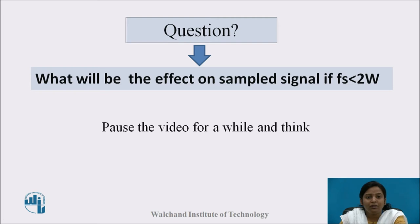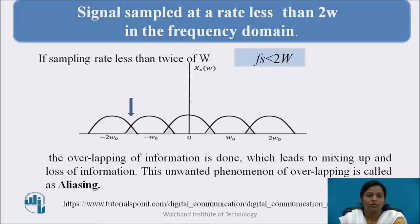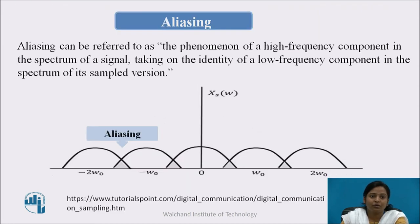What will be the effect on a sampled signal if fs is less than twice W? If fs < 2W, there is overlapping between the two successive cycles of X(ω). Due to this overlapping, mixing and loss of information takes place. This unwanted phenomenon of overlapping is called the aliasing effect. Aliasing can be defined as the phenomenon of high-frequency components in the spectrum of a signal taking on the identity of low-frequency components in the spectrum of its sampled version.